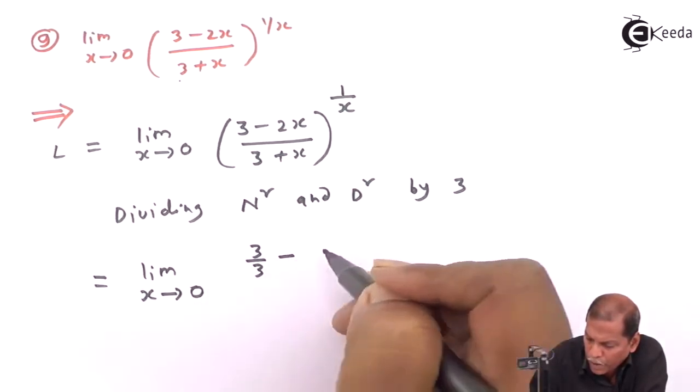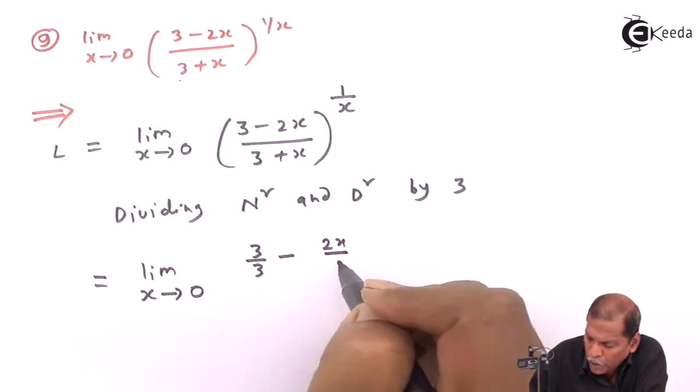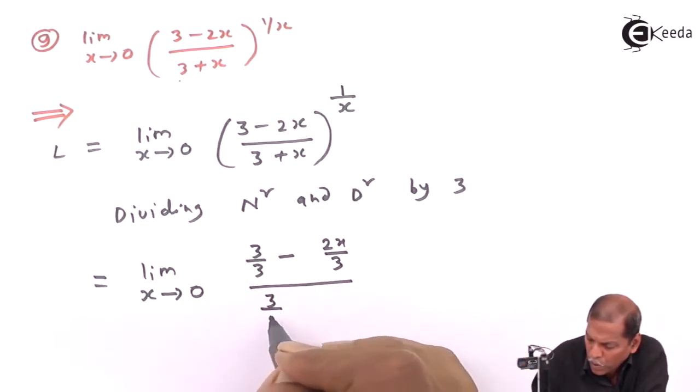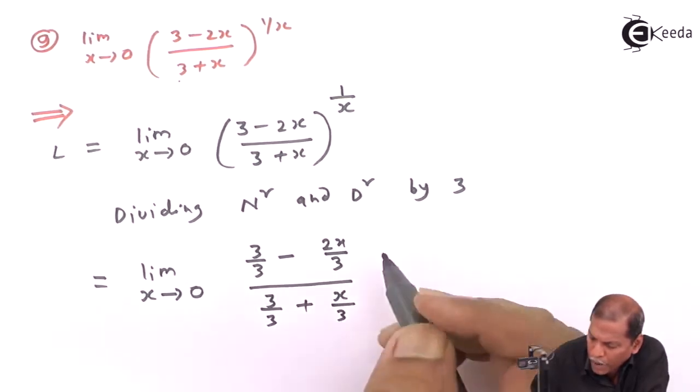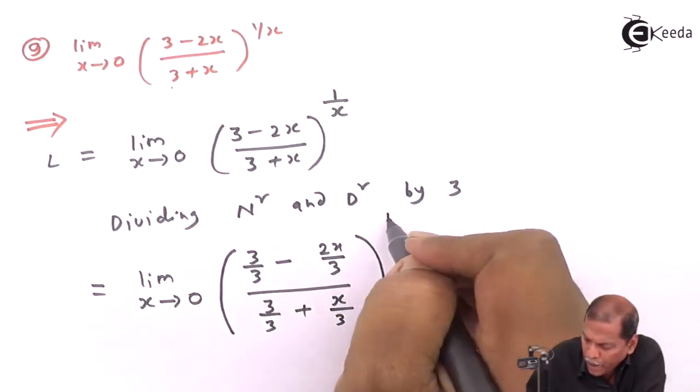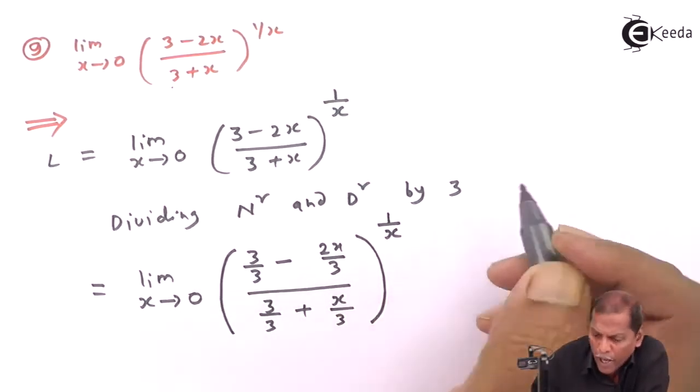we have (3 upon 3 minus 2x upon 3) upon (3 upon 3 plus x upon 3) whole bracket raised to 1 by x.